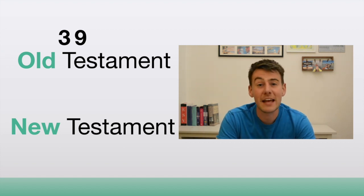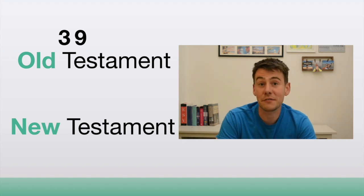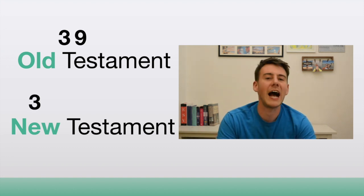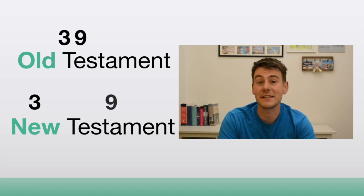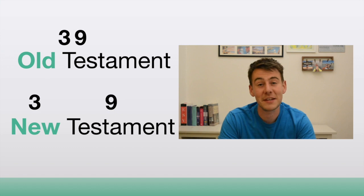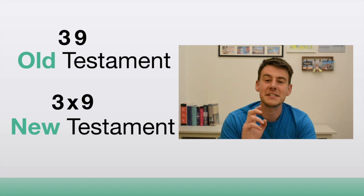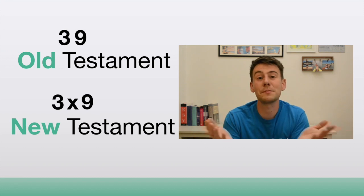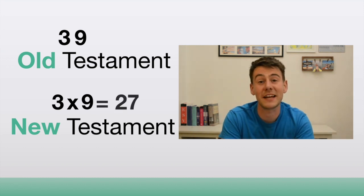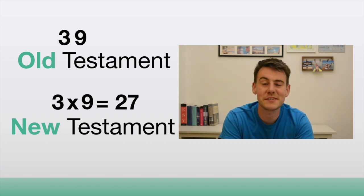So there are 39 books in the Old Testament. The same idea applies to the New Testament: take the letters in 'new' — that's three — and the letters in 'testament' — nine. But you can't add them to get 39, because 39 plus 39 isn't 66. So instead you multiply three by nine, which gives you 27. There are 39 books in the Old Testament and 27 books in the New Testament.